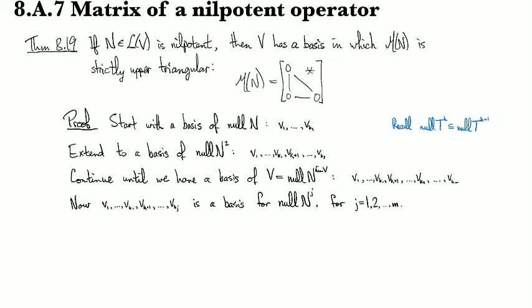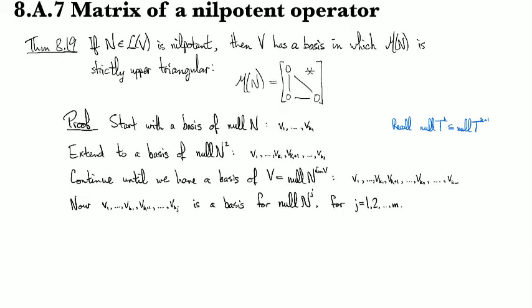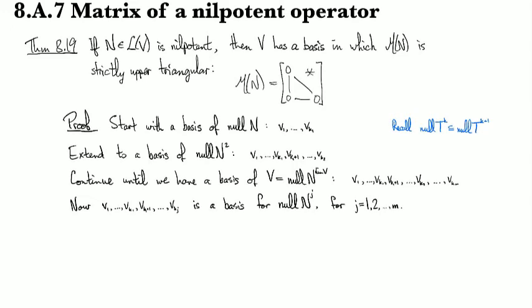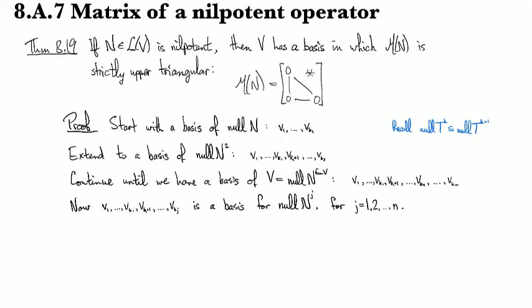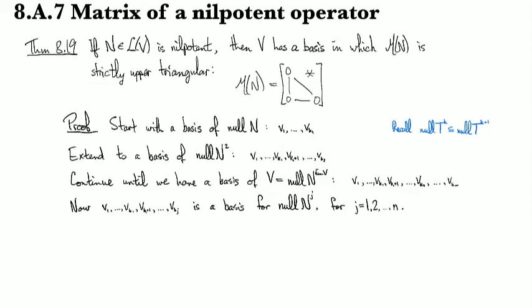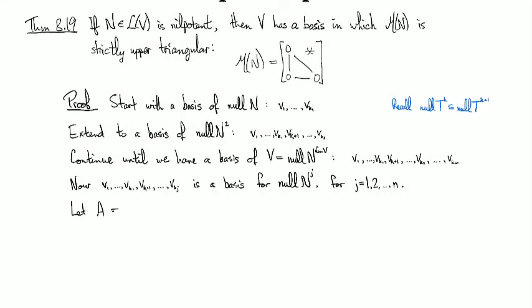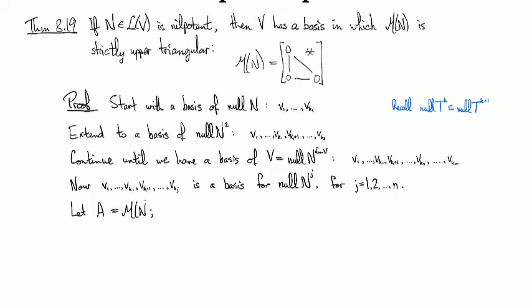And then... Yeah. Okay. Good enough. So... Well, actually, you know what? Sorry. Wrong one. N. So that's the dimension of the whole vector space. There we go. Okay. So then we are going to consider the matrix of N with respect to this basis.